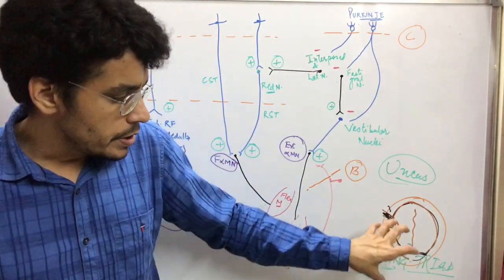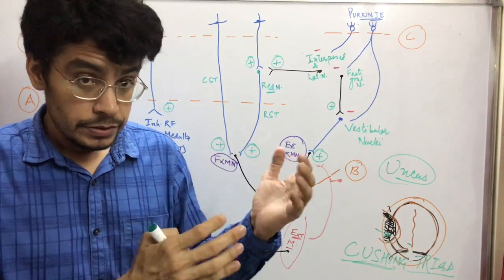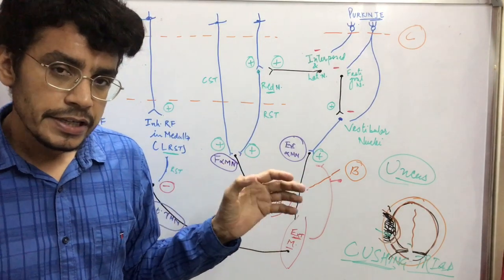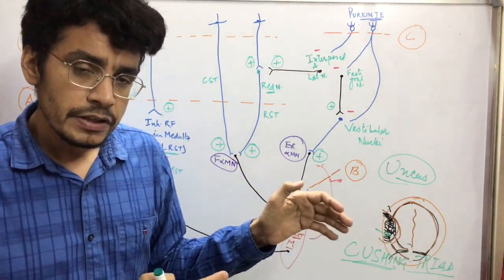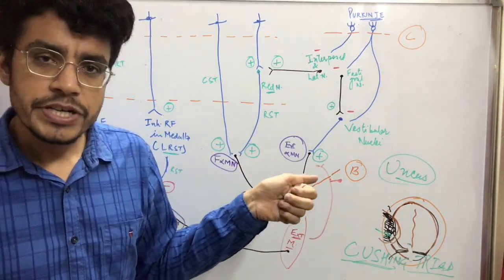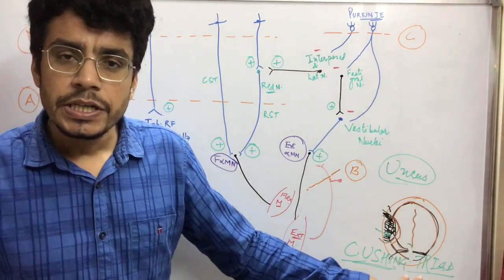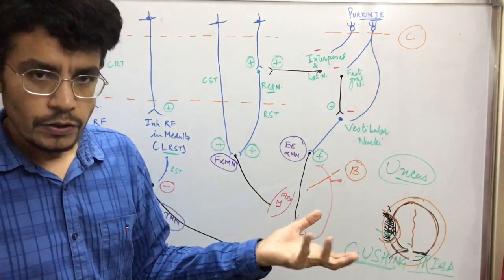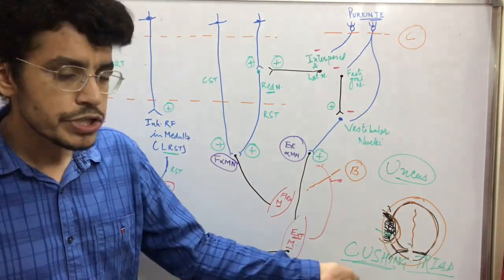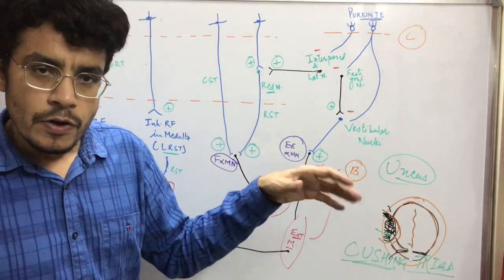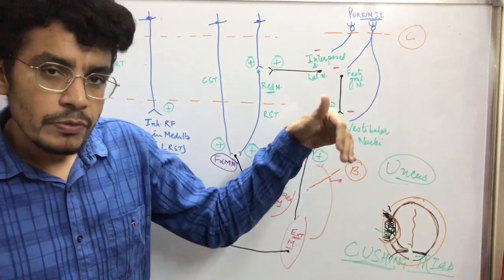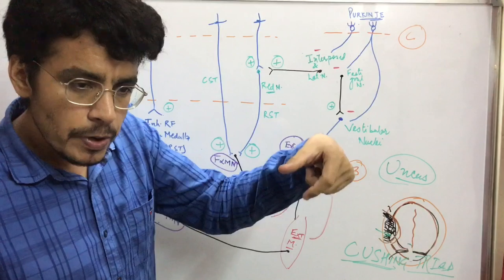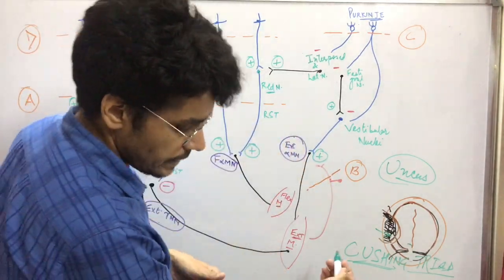As the volume of the hemorrhage keeps on increasing, the clinical features will keep on increasing and the condition of the patient will keep on deteriorating. Initially there will be decrease in alertness, loss of consciousness will be there, Cushing's triad will be there. Now if it compresses more and more, there will be uncal herniation.